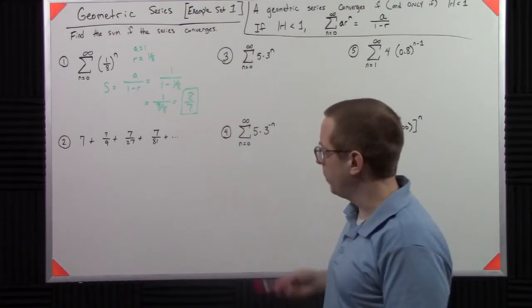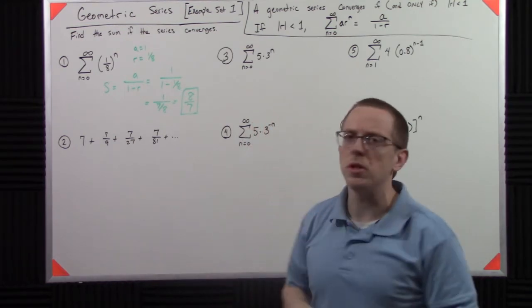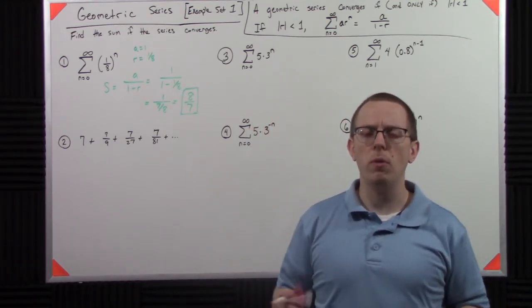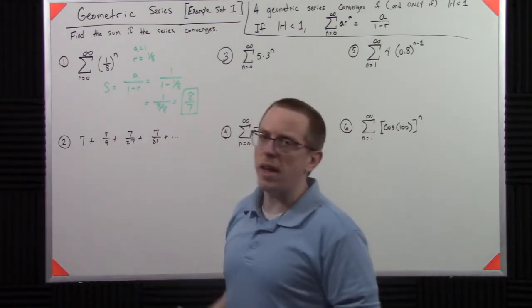The next one is going to be a little more complicated. I have 7 plus 7/9 plus 7/27 plus 7/81. So how do I do this? Well, what I have to do is find the pattern here. What I notice is there's always a 7 in front.